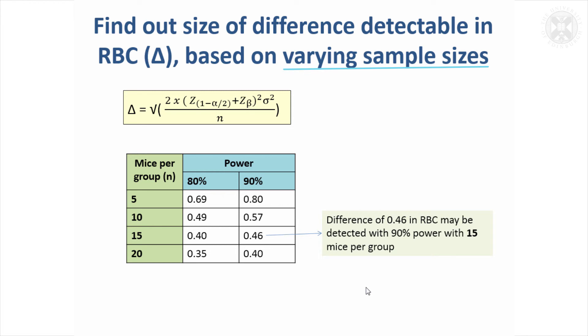Instead of getting the power, you can say, well, for a given amount of power, what sort of difference am I likely to detect? Here we're calculating the difference in red blood cell count that could be obtained with different numbers of mice per group. With 80 percent power and just five mice, we can't detect the 0.5 but we could detect the 0.69. If we go up to 20 mice, we can do a lot more. We can detect a difference of 0.35, so the study becomes more powerful.